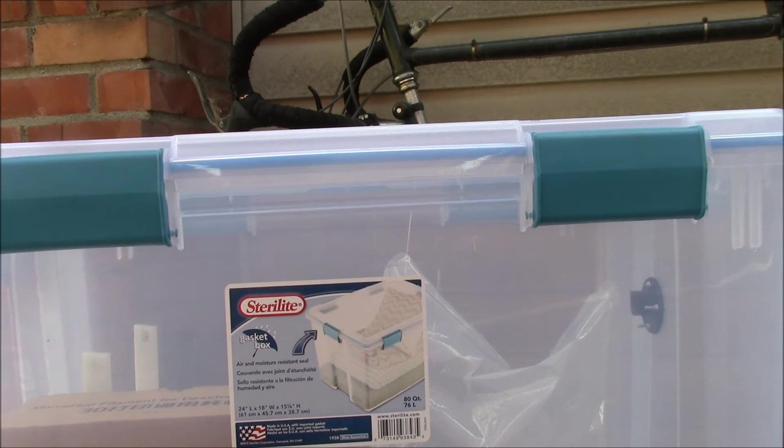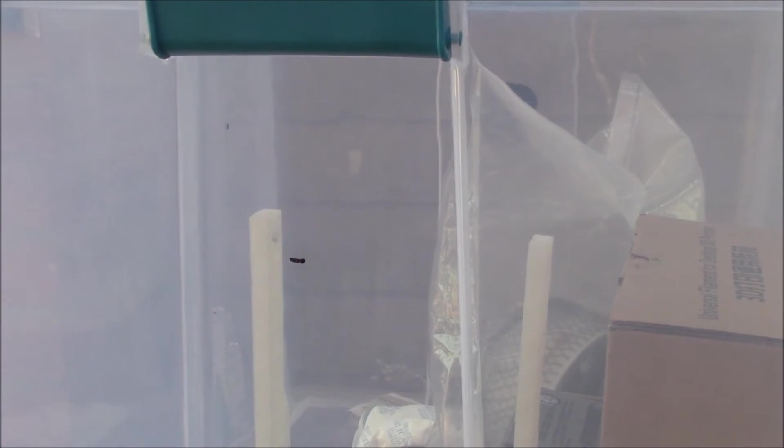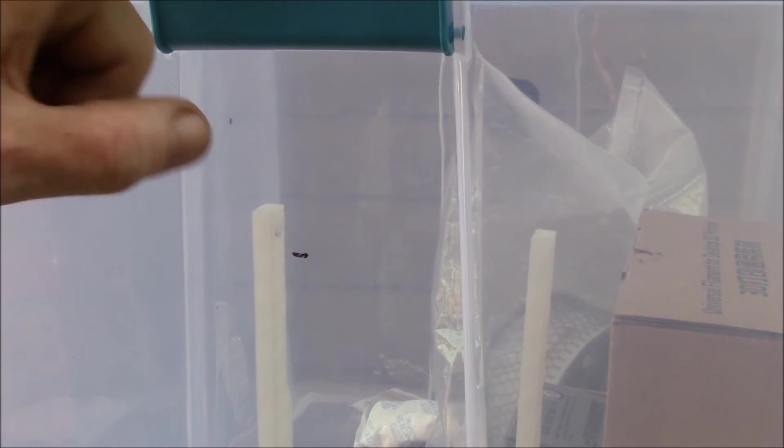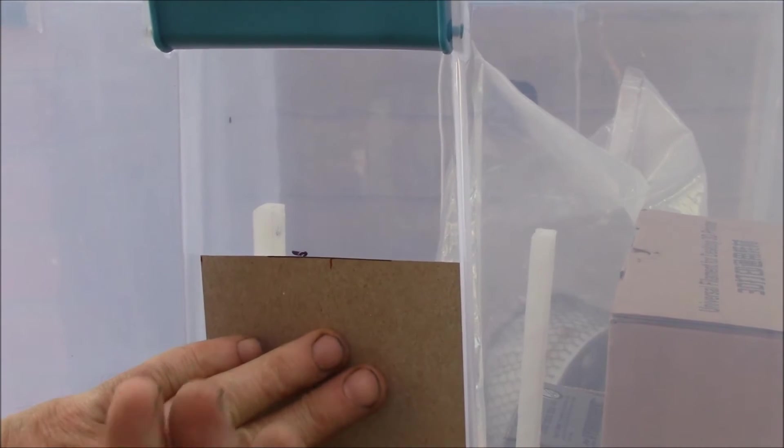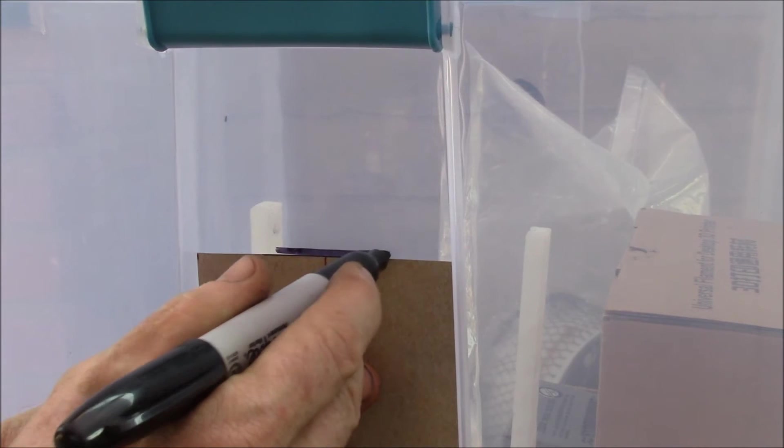Anyway, I'll show you what it looks like when I get ready to put the rod in there. This is how I mark the place for my hanger - I come down from the top, just run my tape measure down five inches. I have a little piece of cardboard here and I just draw a line across.